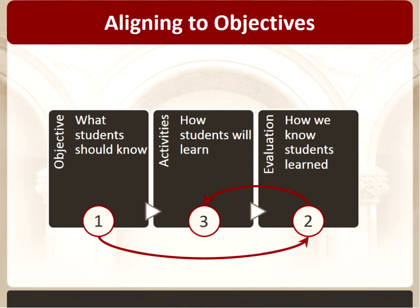Once you have your course plan designed, it's a good idea to go back and look at all three components. We often distribute what we call a three-column chart — a table with three columns looking at objectives, learning activities, and evaluation — so that you can see them all across a row and make sure they all align to one another.